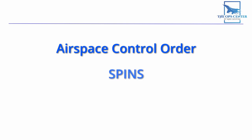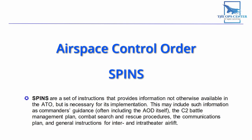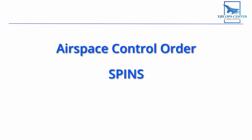Then we have SPINS, which is shorthand for special instructions. This is a set of instructions that provides information not otherwise available in the ATO. So the communications plan that lists what frequency each flight should be on — that's in here. And what about the plan for rescuing downed pilots? That's in here too.